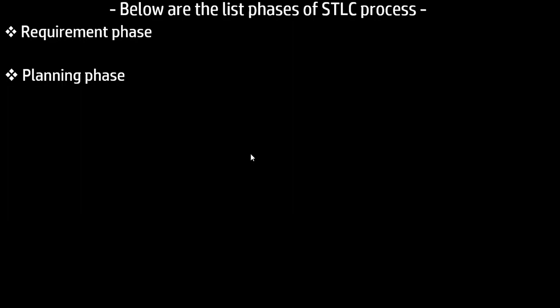The next phase is the Analysis Phase, which is one of the Software Testing Life Cycle phases. This phase defines what is to be tested. Basically, we identify the test conditions through the requirement documents, based on the product risk and other test bases. Once we identify the test conditions, all those conditions should be traceable back to the requirement document. Let me mention a few factors we consider in the Analysis Phase for what is to be tested.